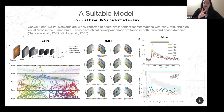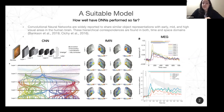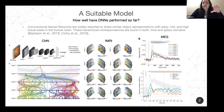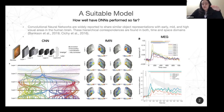From all the image pairs, he obtained a representational dissimilarity matrix, which he used to perform a searchlight in the brain using fMRI data. The results, shown in the middle part, indicate that for the most superficial initial layers there is a better correlation between the RDM model and the early visual areas. As you go deeper into the neural network's layers, you can see a spread from the dorsal and ventral streams.